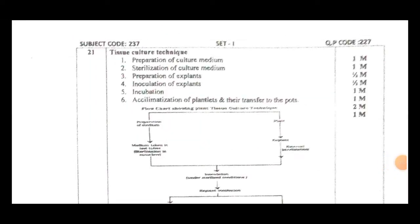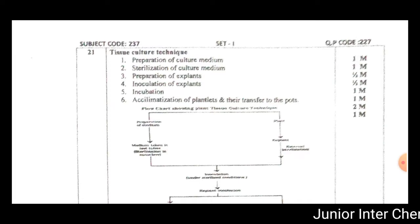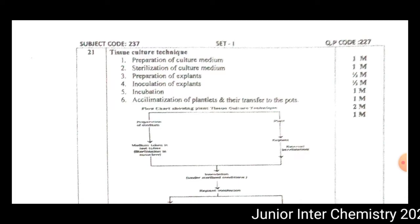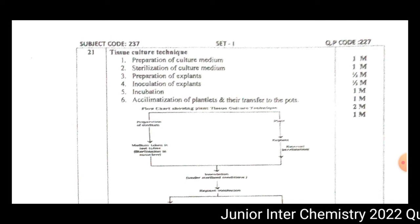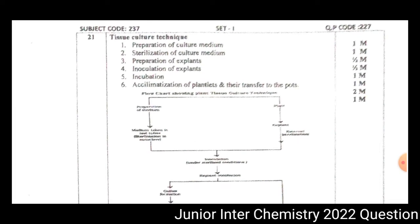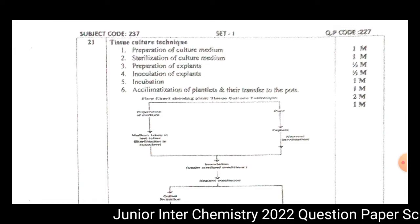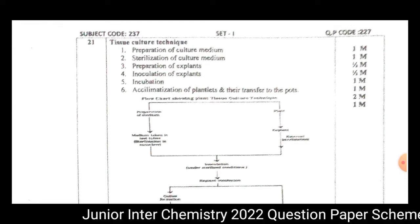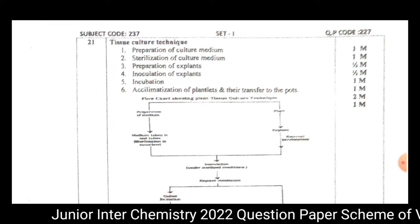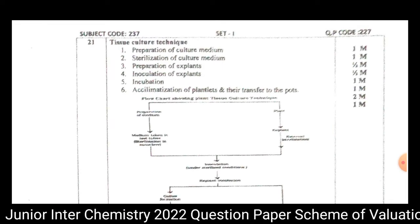The next question is on the Tissue Culture Technique, presented as a flowchart. The steps are: preparation of culture medium, sterilization of culture medium, preparation of explant, inoculation of explant — each worth half a mark — incubation for growth, and acclimatization. The total is 5 marks for 6 points in the flowchart.